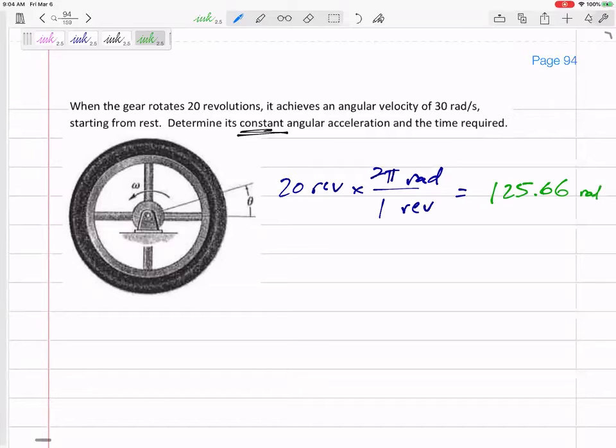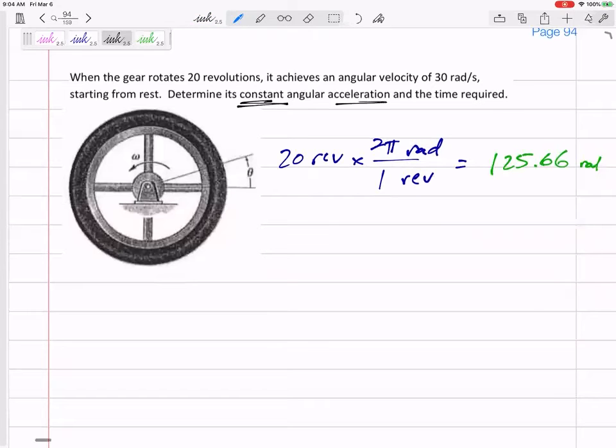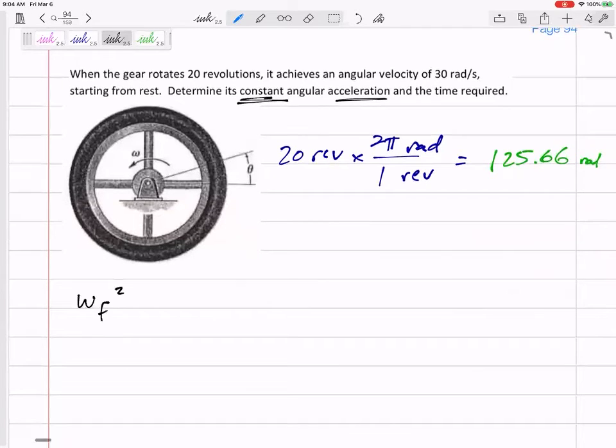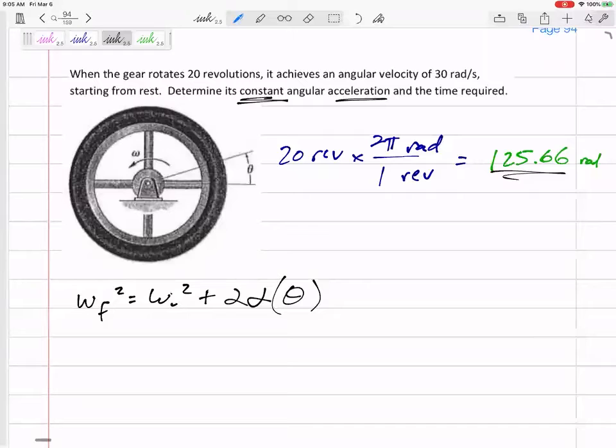So it started from rest, it achieves a final angular velocity of 30 after it goes a theta of 125.66 radians. Find the acceleration and find the time required. So maybe a little bit trial and error, or just really look at those three equations. How about this one: omega final squared equals omega initial squared plus 2 alpha theta. That's a delta theta, that's theta final minus theta initial, which is that 125. You can just assume it starts at zero unless it specifies otherwise. Starts at zero, it ends at 125.66.